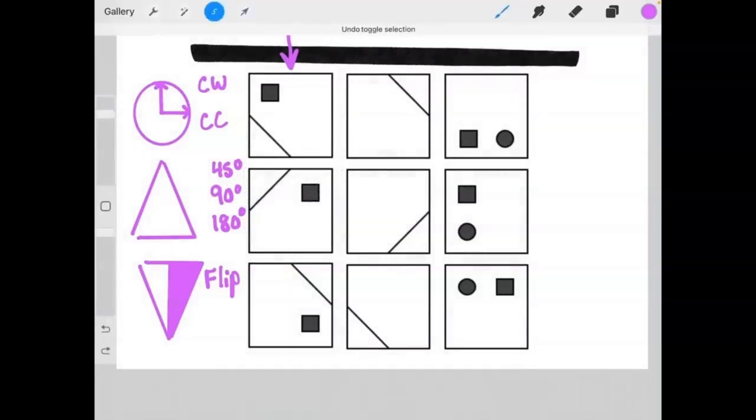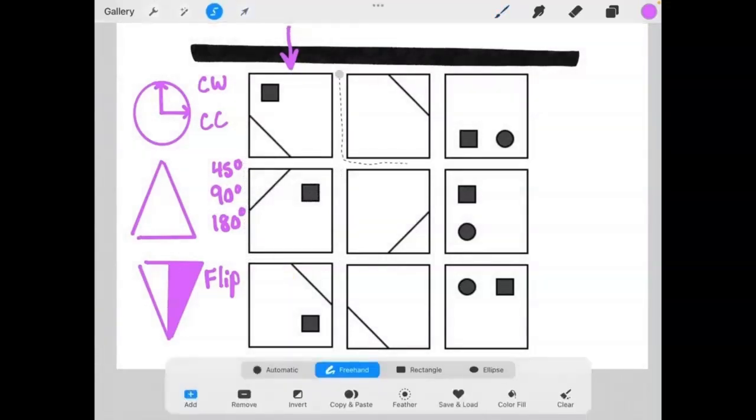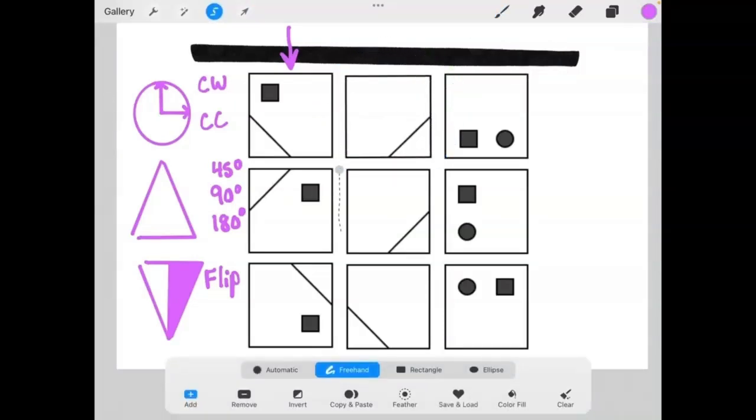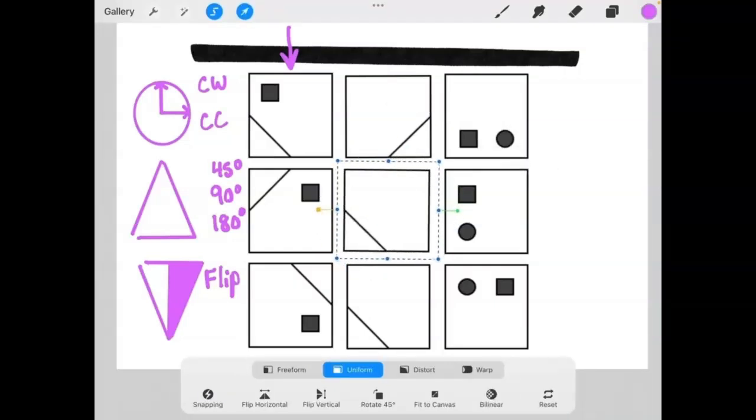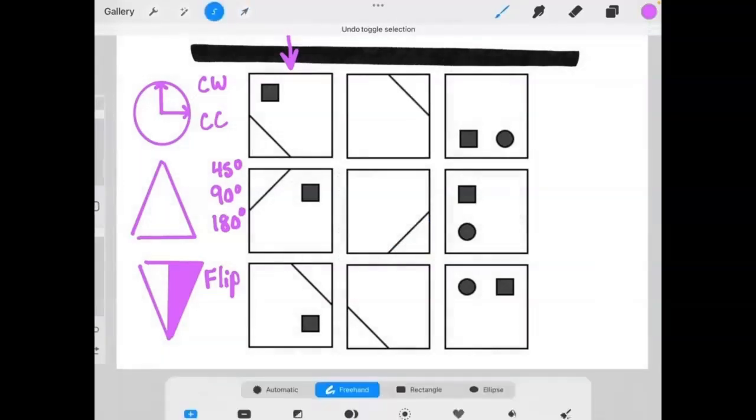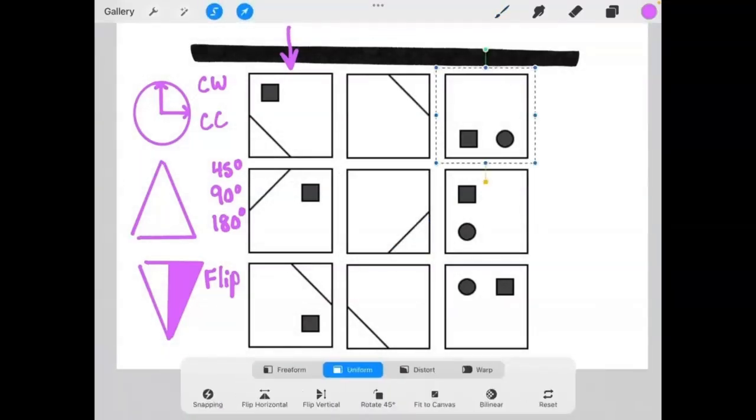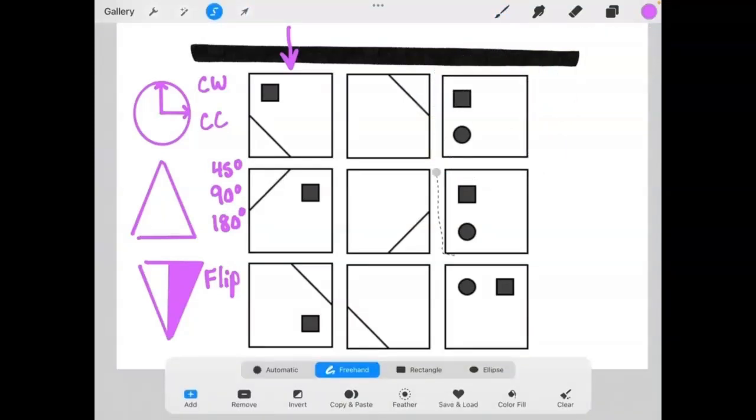If we do the same thing for the second column, the first element rotated 90 degrees will match the second element. And the second element of the column, rotated 90 degrees again, will match the third element in that column. And finally, the same thing goes for the third column. The first element is rotated 90 degrees to match the second element, and the second element is rotated 90 degrees to match the third element.